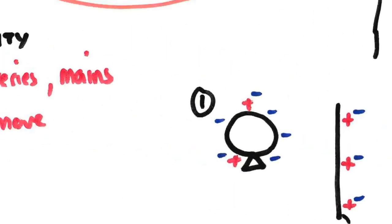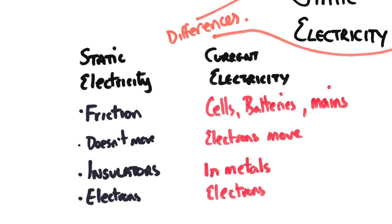You may be asked the difference between static electricity and current electricity. In static electricity, you charge things by friction. You can also charge by induction — that's what we showed with the balloon brought up to the wall creating an induced positive charge. In static electricity, charges do not move freely; this is how insulators like rubber and plastic become charged. In current electricity, we talk about cells, batteries, and mains — electrons move freely through conductors such as metals. Both involve electrons, but static uses friction while current uses batteries and mains.